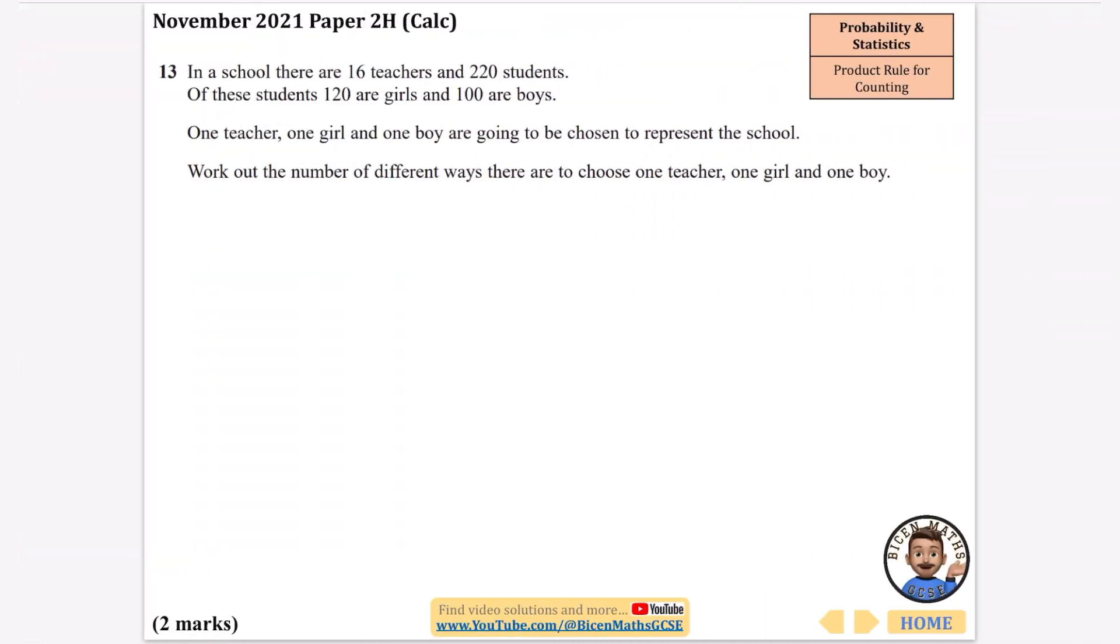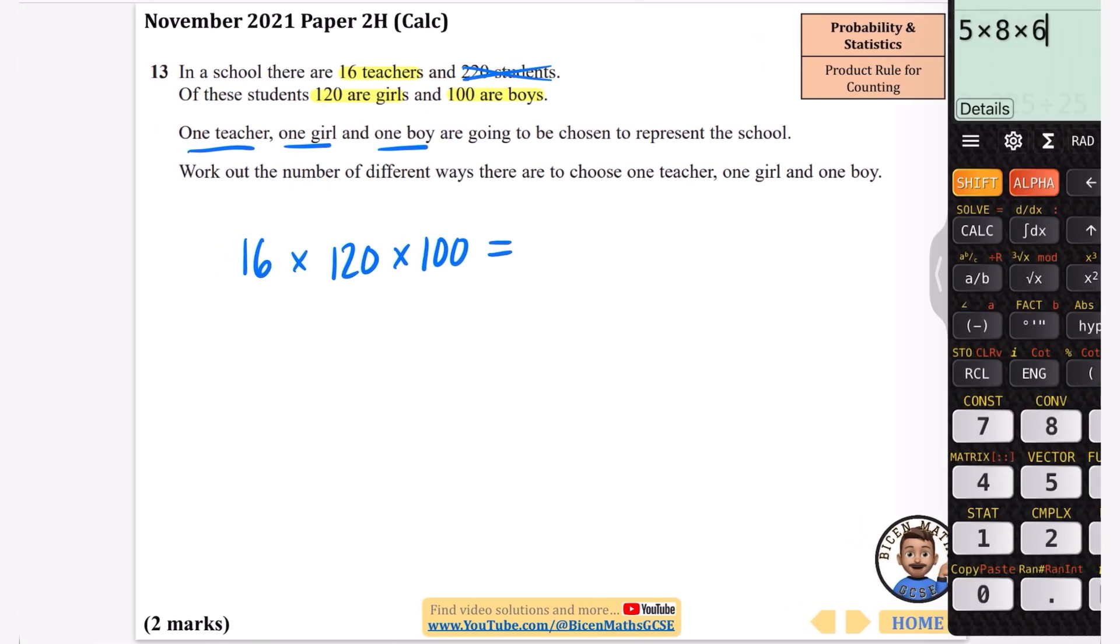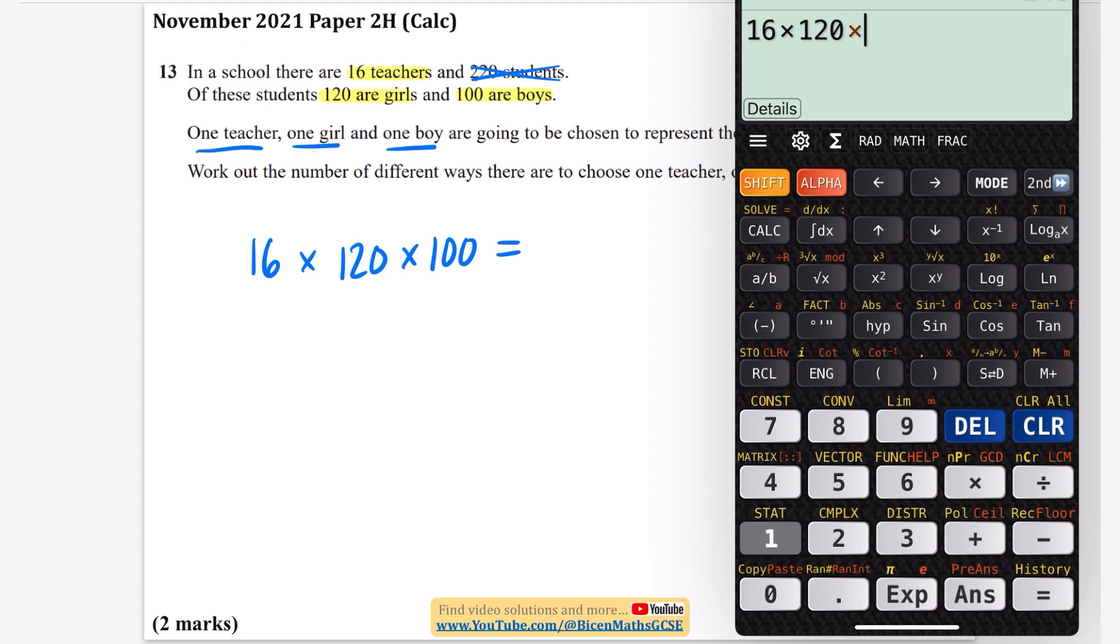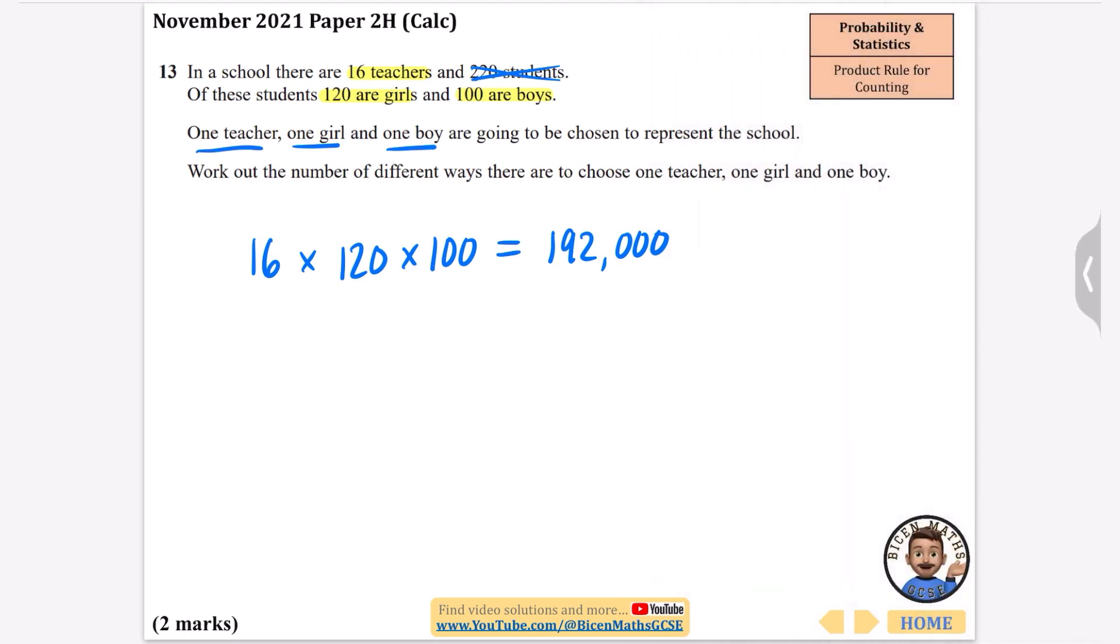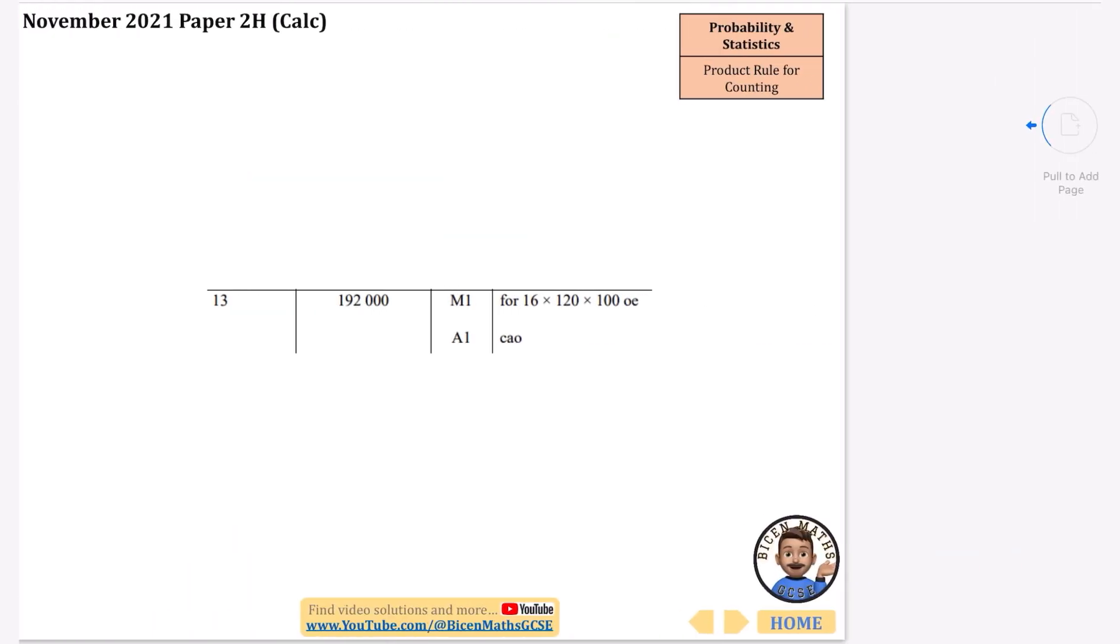In a school there are 16 teachers and 220 students. Of these students, 120 are girls and 100 are boys. One teacher, one girl and one boy are going to be chosen to represent the school. Work out the number of different ways there are to choose one teacher, one girl and one boy. I think this 220 students is not really needed. So the teacher, there's going to be 16. The girls, we've got 120, and the boys, we've got 100. So we're going to just multiply those together. We'll do 16 times 120 times 100. There is a staggering 192,000 different combinations. So the answer is 192,000.